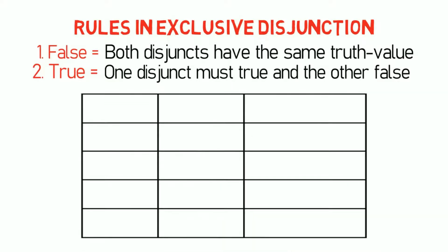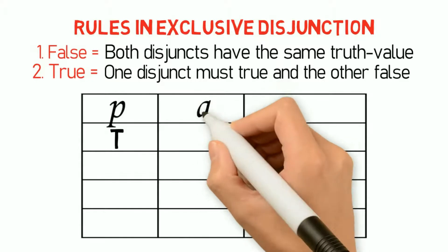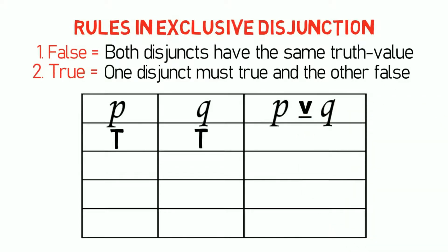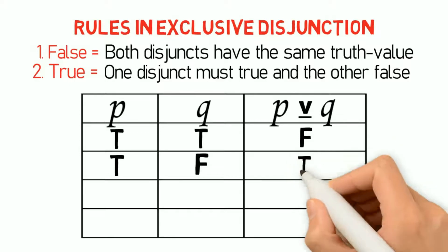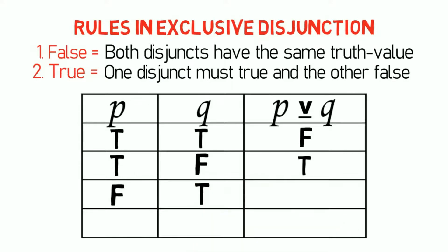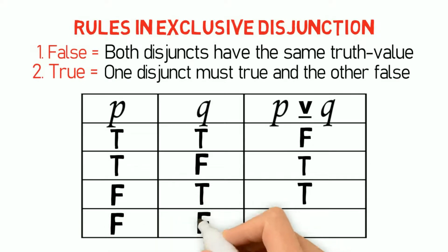To illustrate that in a truth table: if P is true and Q is true, then 'P or Q but not P and Q' is false. If P is true and Q is false, then 'P or Q but not P and Q' is true. And if P is false and Q is true, then 'P or Q but not P and Q' is true.